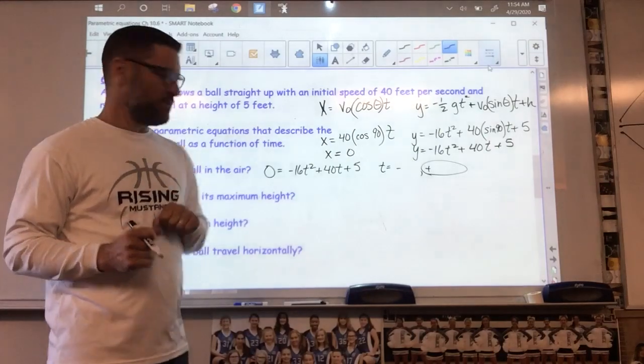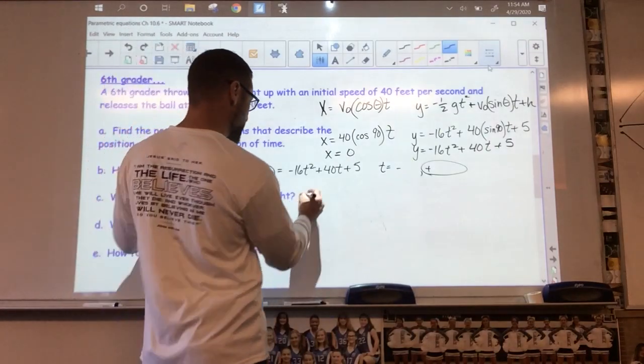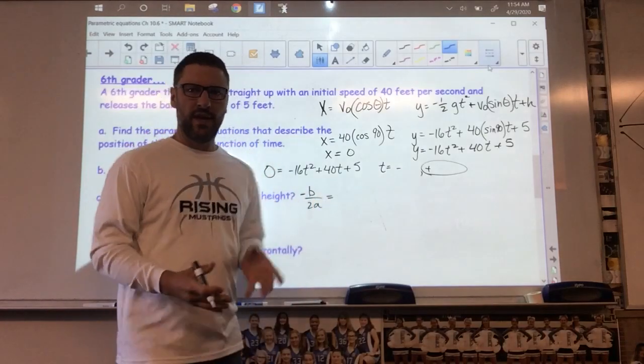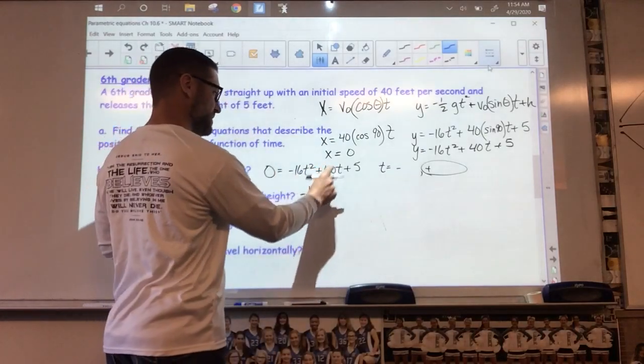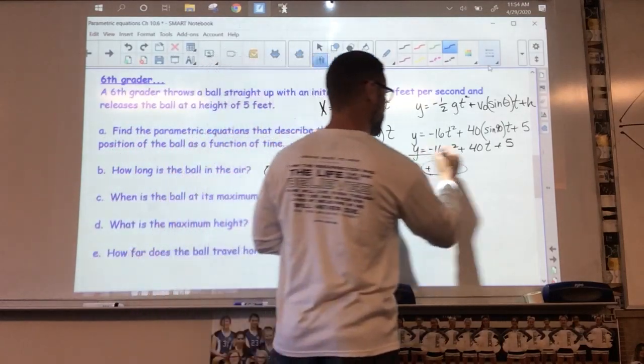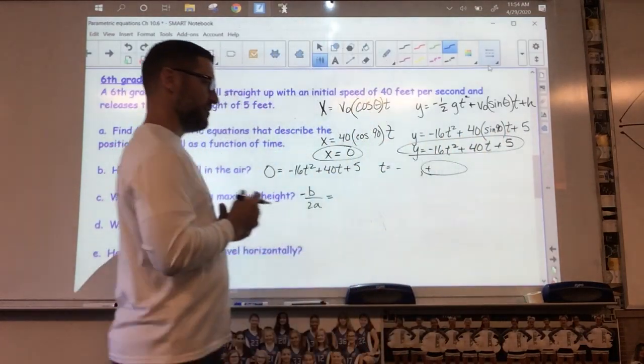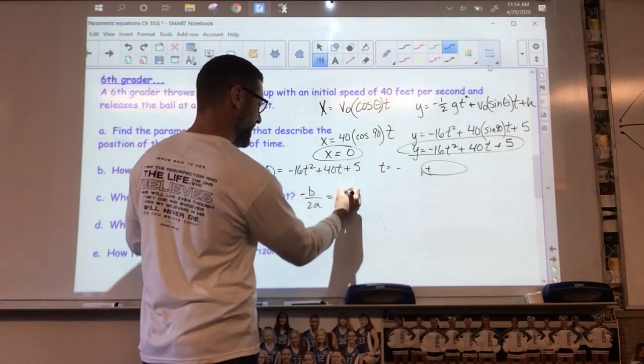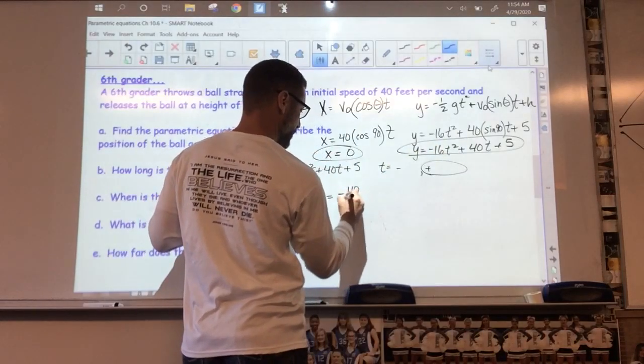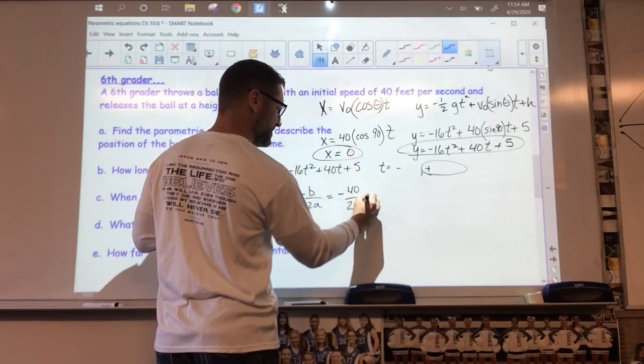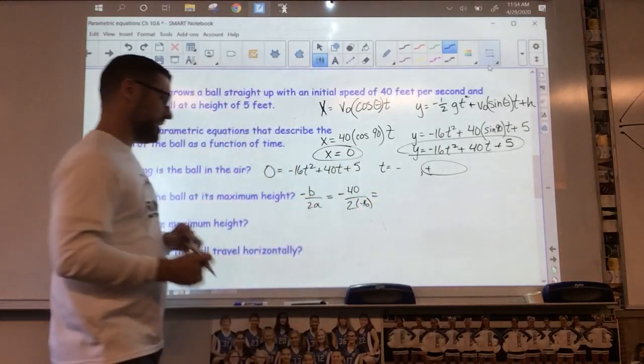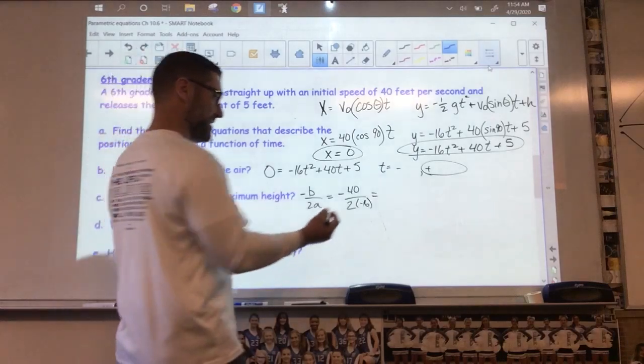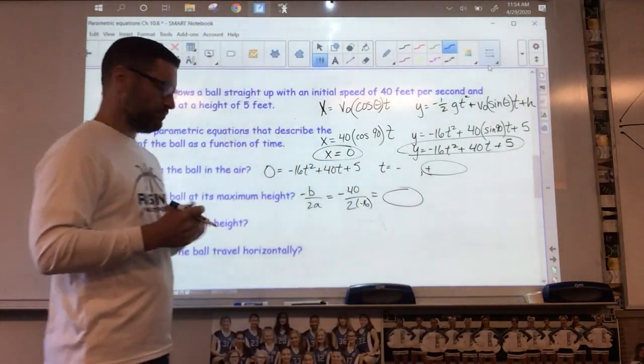When is the ball at its maximum height? Well, the ball is at its maximum height through this equation, negative b over 2a. It's an up and down version of it. So I want to use this equation, this up and down version. On this one, it's negative b, which is my 40, negative 40 over two times my a value, which is negative 16. And the answer for that is when it's at its maximum height. You'll find an answer there. Okay, and you'll enter that.